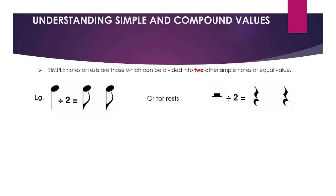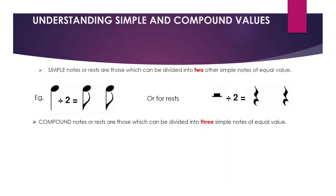A minim rest split in half gives you two crotchets. If you're wondering how to split it in half, we go back to our duration table from the very start — the semi-breve at the top splitting all the way down to the demi-semi-quaver at the bottom. Understanding the duration table makes life so much easier for everything we do.